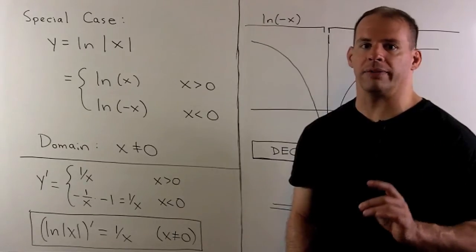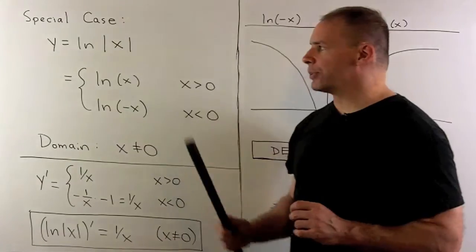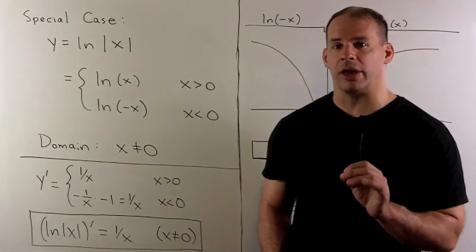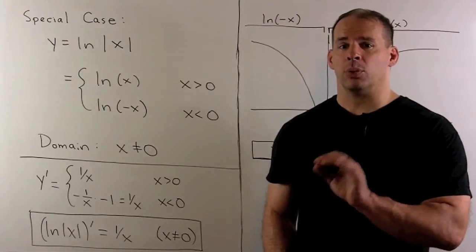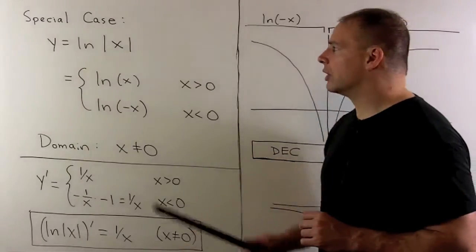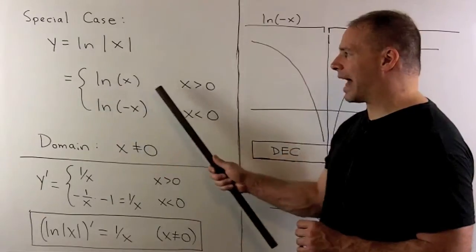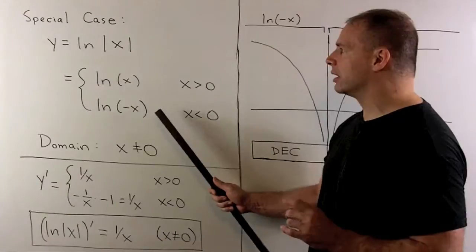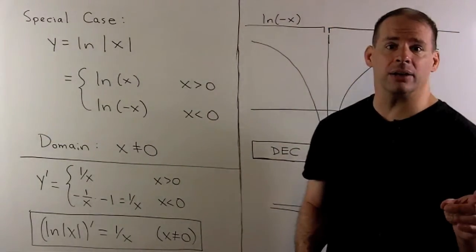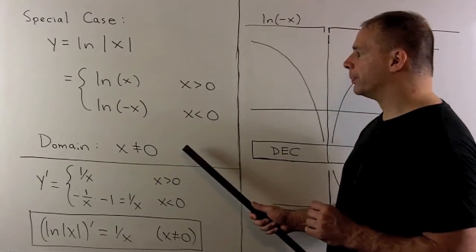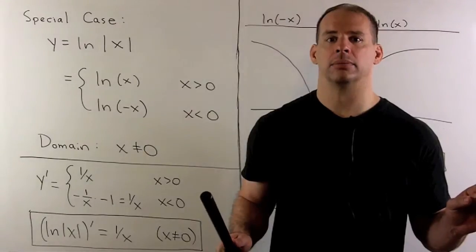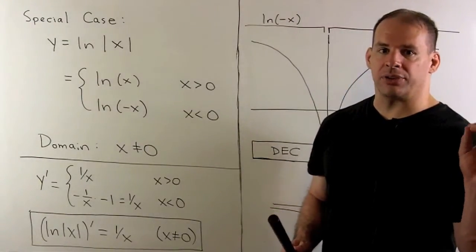Here we have a special case: y equal to natural log of the absolute value of x. Absolute value of x is a piecewise function: when x is greater than or equal to zero it returns x, and when x is negative it returns minus x. So our function is natural log of x when x is greater than zero, and natural log of minus x when x is less than zero. At x equals zero we'd get natural log of zero, which is undefined, so the domain is x not equal to zero. Taking the absolute value extends the domain of natural log as much as possible.